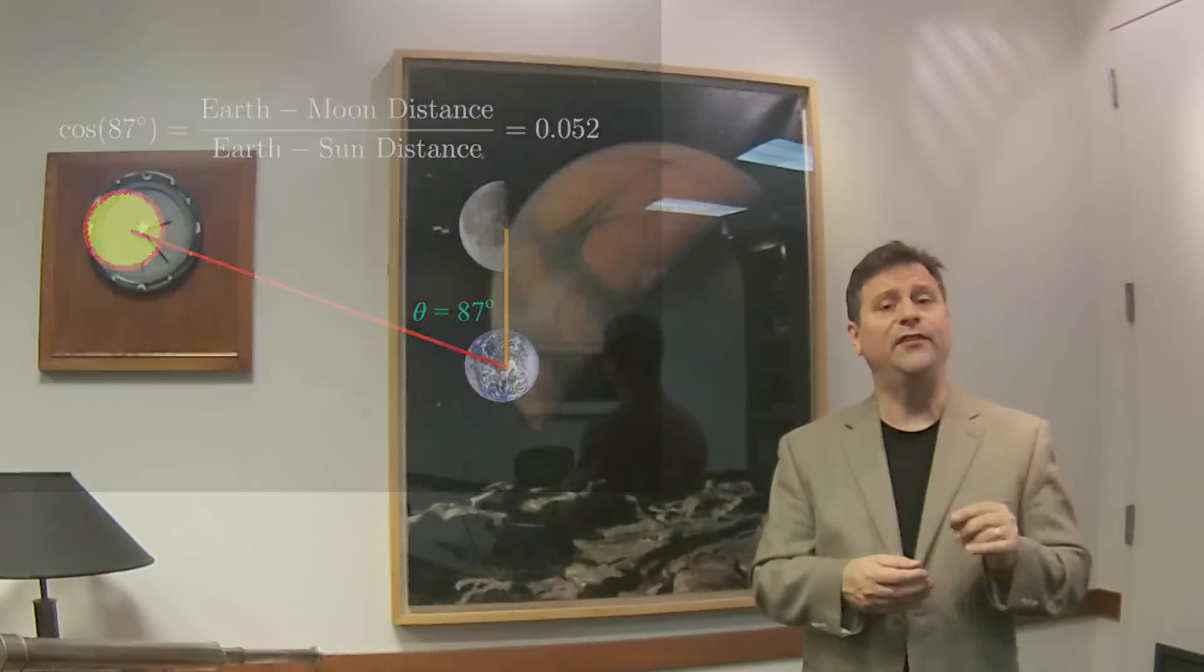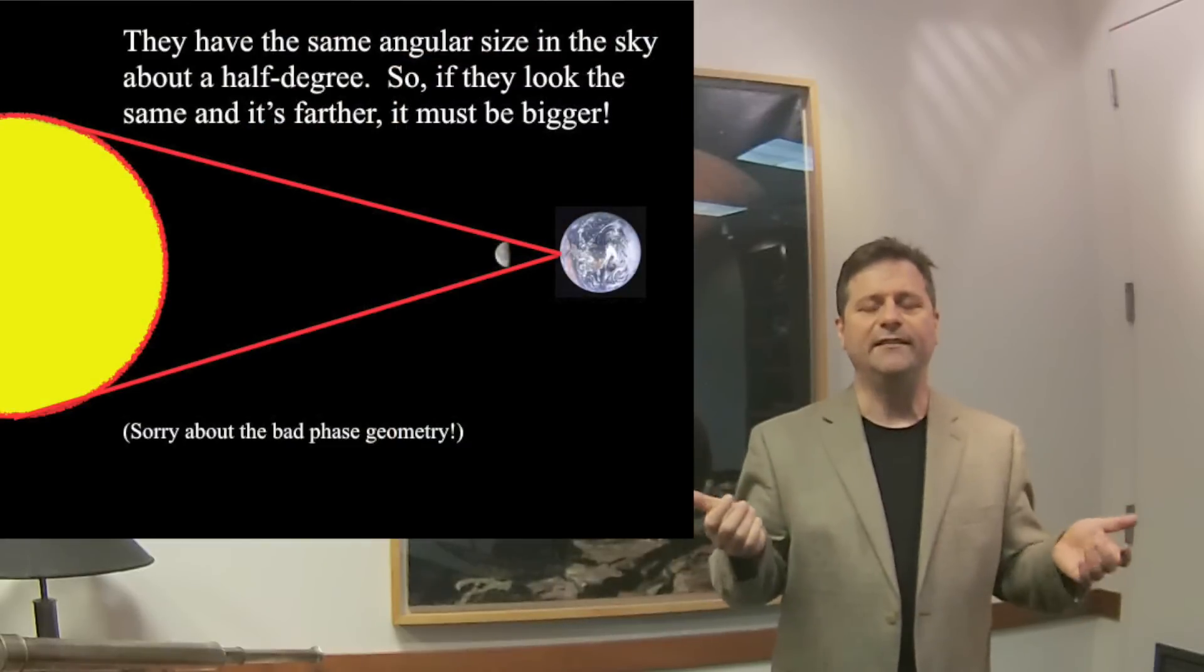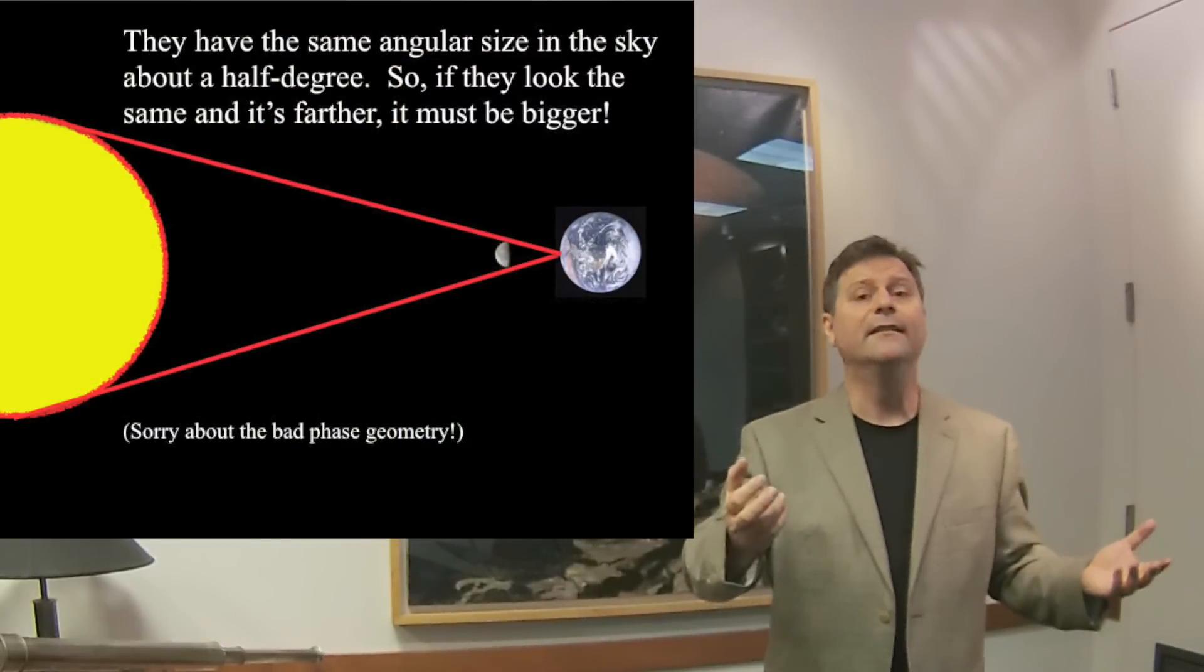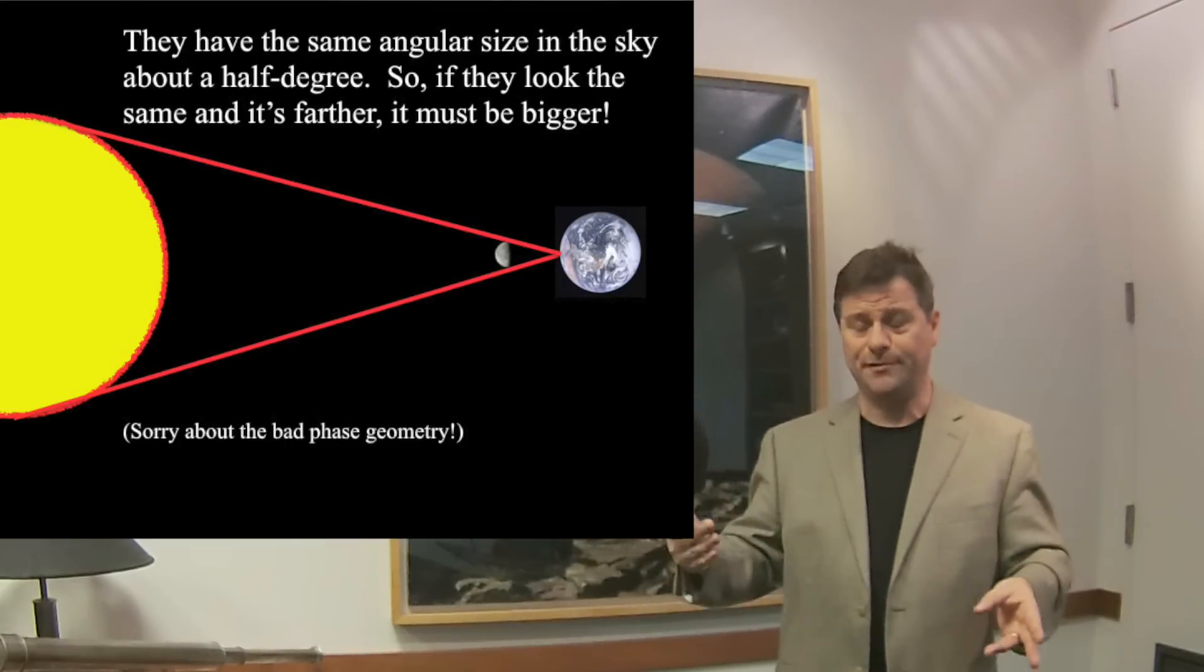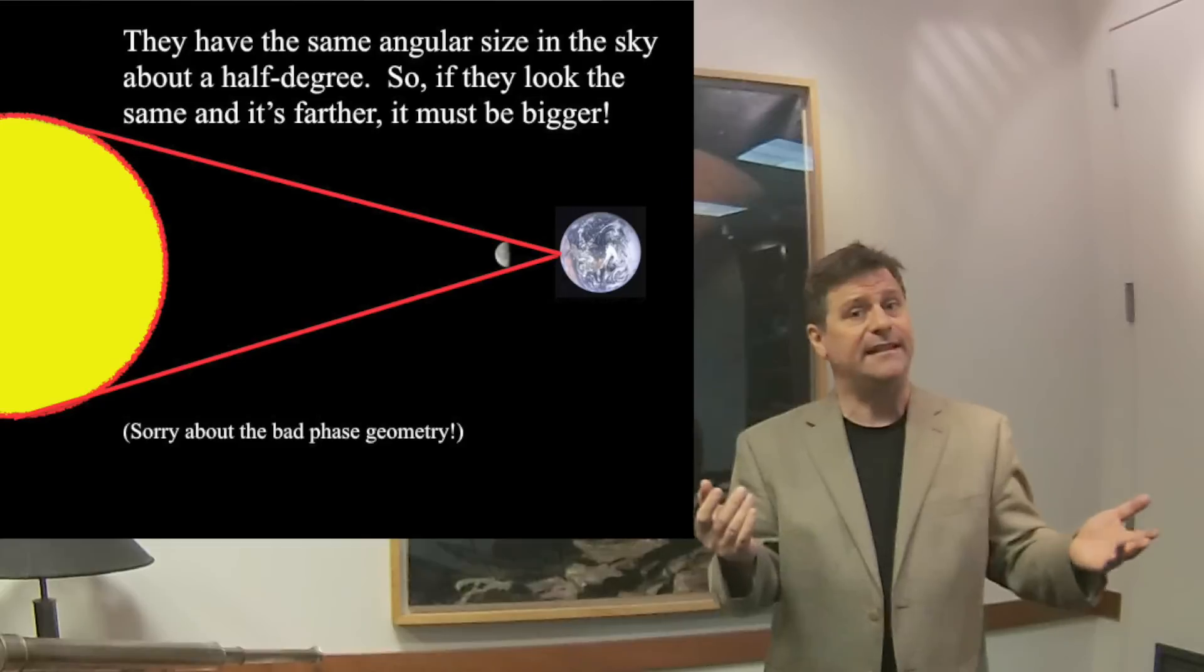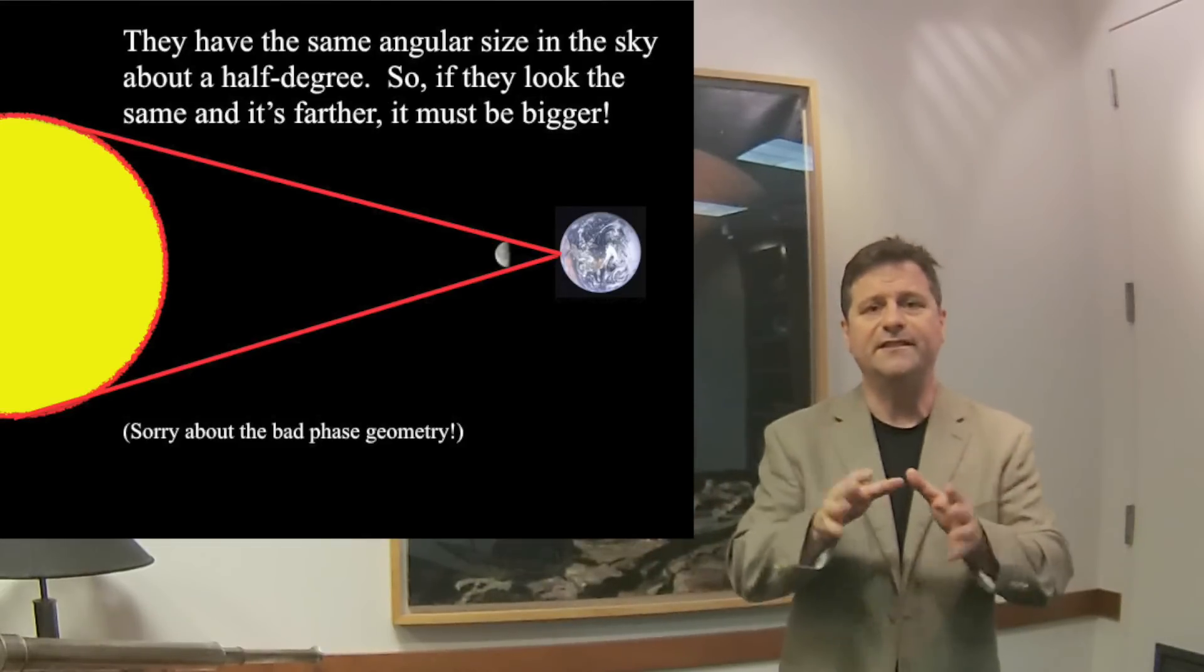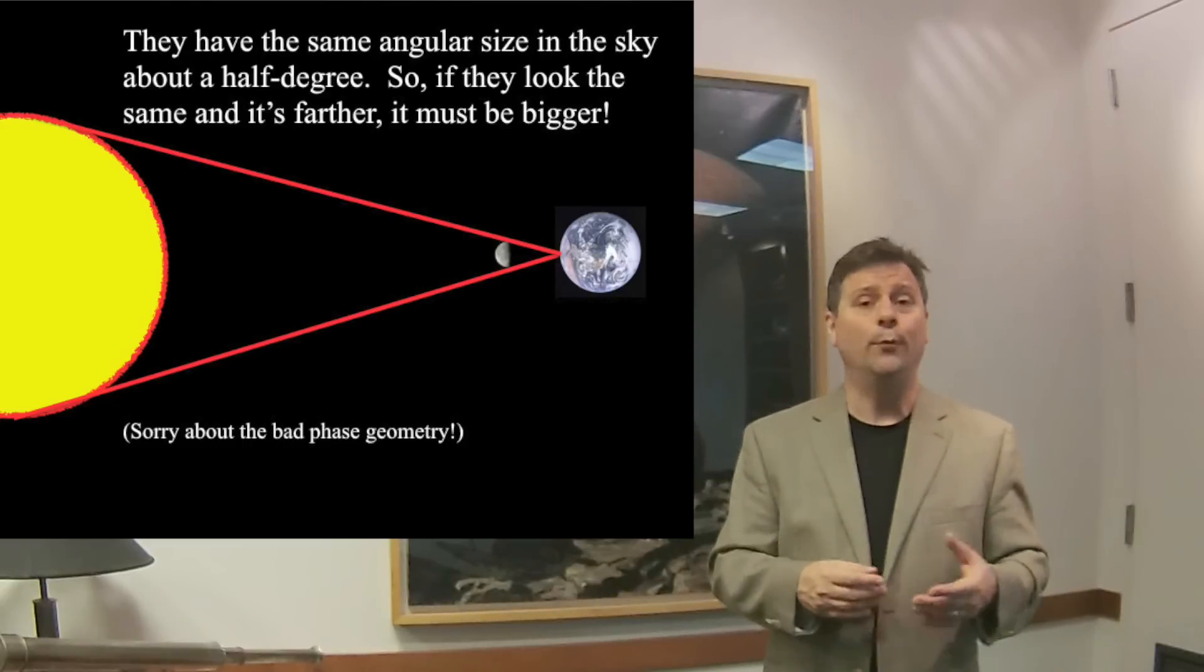So Aristarchus found out something very important. He found out that the sun is much, much, much further than the moon. Now, he could also turn this around and say, wait a second. If we look in the sky and the moon and the sun look to be the same size in the sky, therefore, if the sun is 19 times further than the moon, it has to be 19 times bigger. So that's the nature of angular things that subtend angles across the sky.